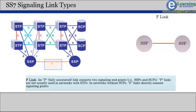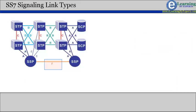F links are not usually used in networks with STP's. In networks without STP's, F links directly connect signaling points.